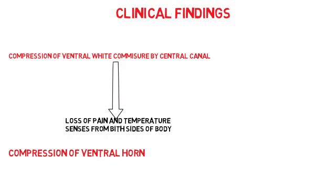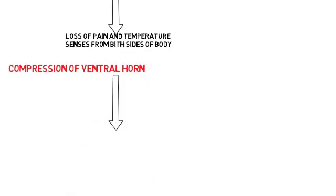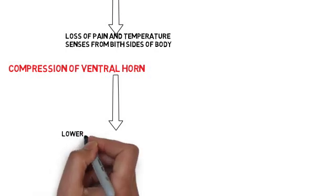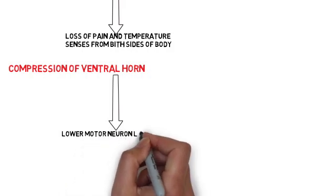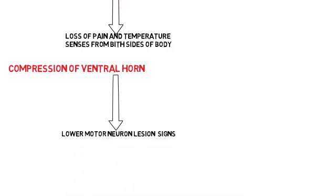The next area compressed by the expanding central canal is the ventral horn of the spinal cord, and as a result the lower motor neuron supply to the muscles at the level of the lesion is lost. Therefore, we also get the signs and symptoms of a lower motor neuron lesion.